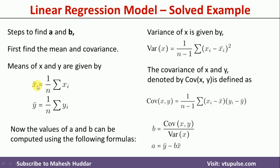So, we have already calculated the mean of x and y; we can put those values in. The value of b is calculated first, and using that we will get the value of a. This is the process we need to follow to find the values of a and b. Now we will apply this process to the given data set.